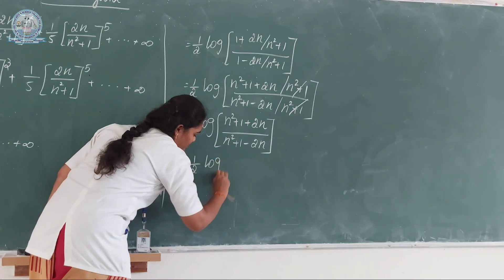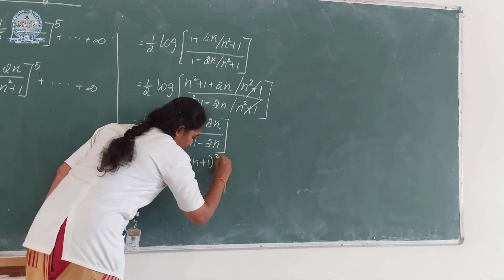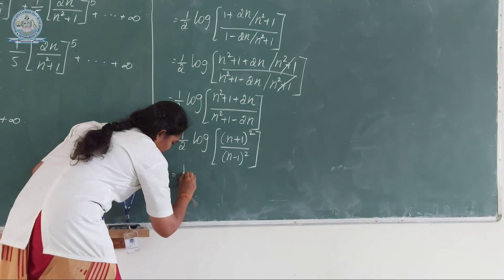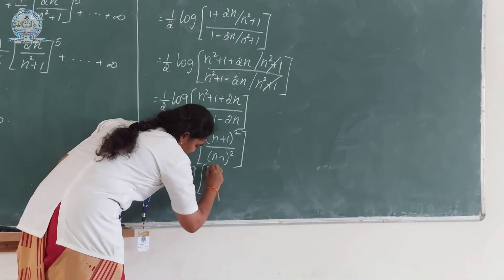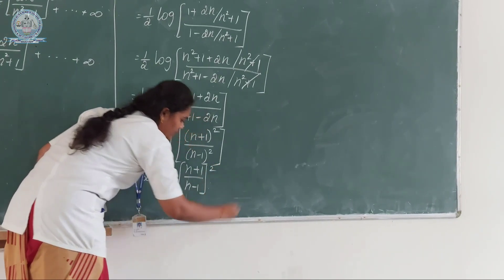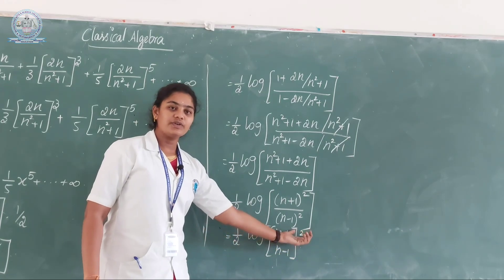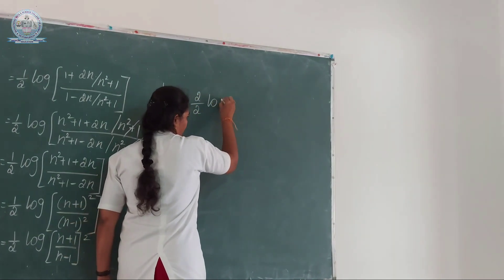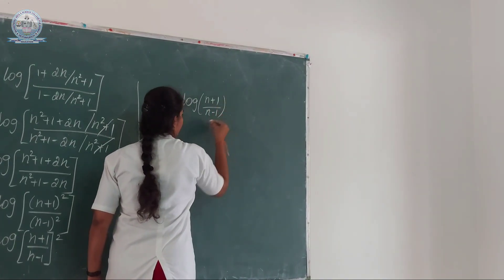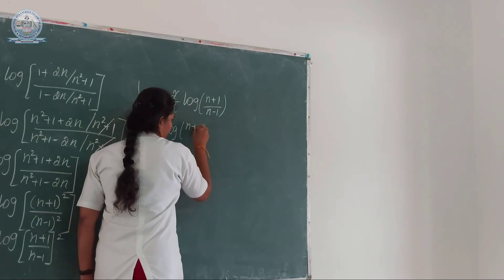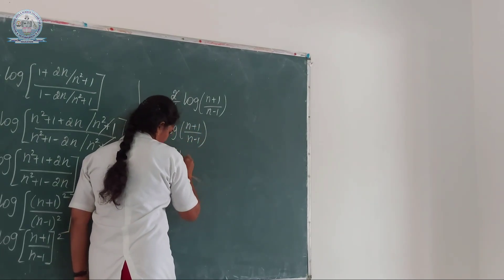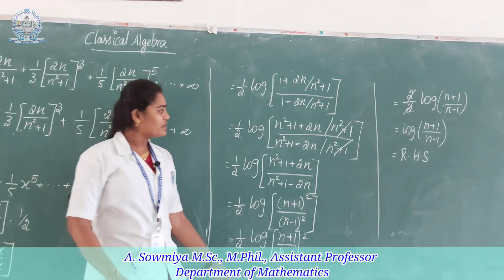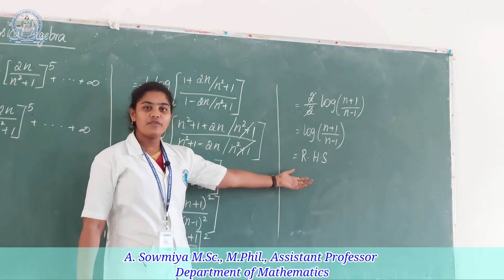Now (n squared plus 2n plus 1) is in the form (a plus b) squared, so it equals (n plus 1) squared. And (n squared minus 2n plus 1) is in the form (a minus b) squared, so it equals (n minus 1) squared. Using the logarithm property log a to the power b equals b times log a, we get 2 over 2 times log of (n plus 1) over (n minus 1), which simplifies to log of (n plus 1) over (n minus 1). This equals the LHS, hence proved.